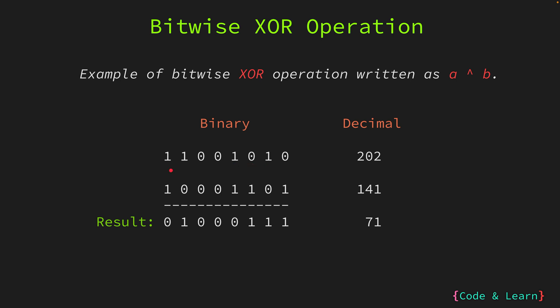For the leftmost bit, or the most significant bit, we have 1 in A and 1 in B. Since both bits are the same, the XOR operation will yield 0. Moving on to the second leftmost bit, we have 1 in A and 0 in B — here one bit is set and the other is not, therefore the XOR operation will yield 1. Next we have 0 and 0 — since no bit is set, result is 0. Again we have 0 and 0, result is 0.